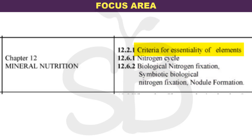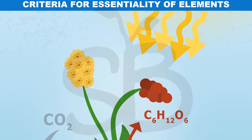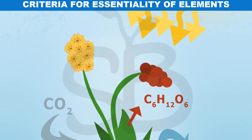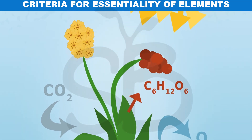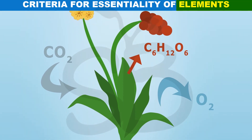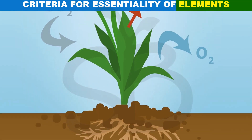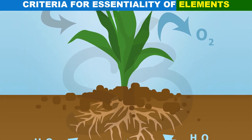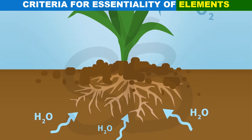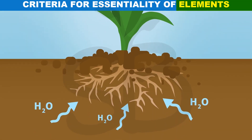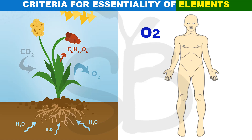We will use the criteria for the Essentiality of Elements and discuss them in this video. For autotrophic organisms to complete their life cycle, different types of elements are available. Elements are different — for example, under aerobic conditions, humans and plants cannot live without oxygen.